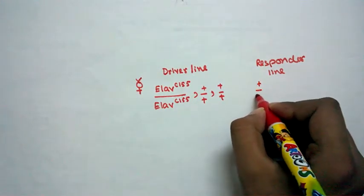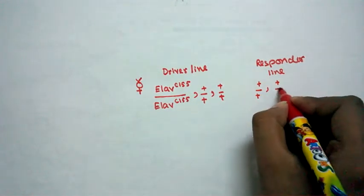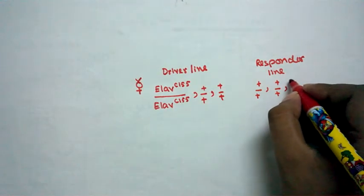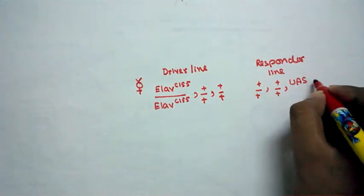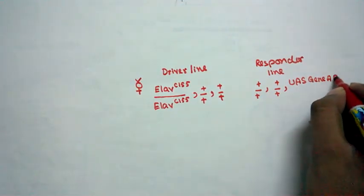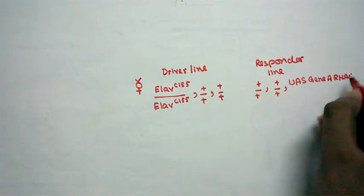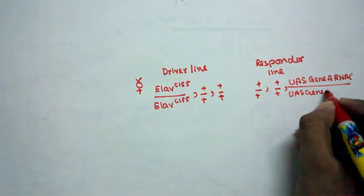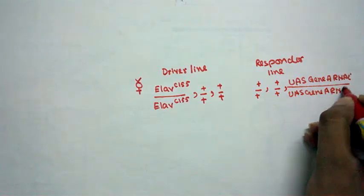So let's say the particular RNAi construct is in the third chromosome and it's under UAS control. So we would write UAS-gene A RNAi over UAS-gene A RNAi.